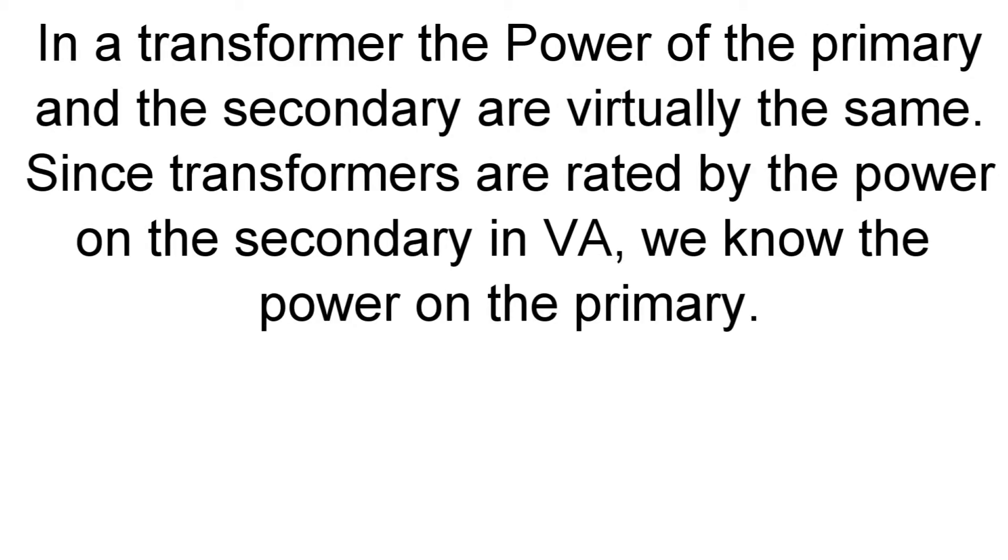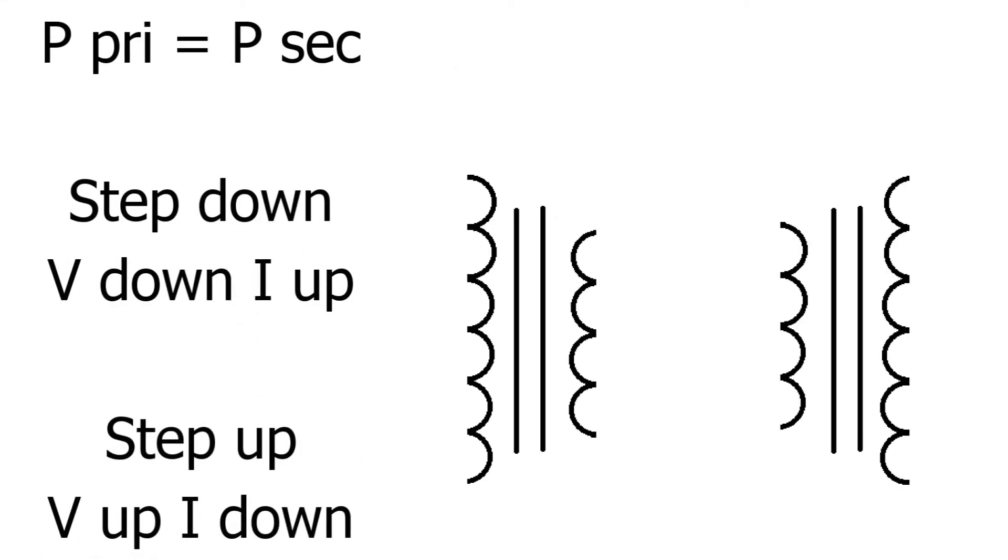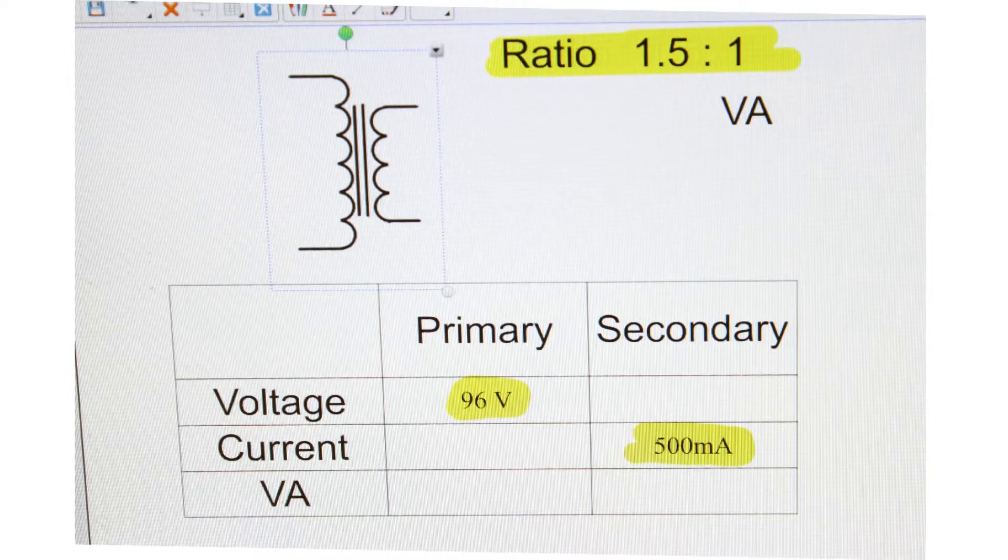In a transformer, the power of the primary and secondary are virtually the same. Since transformers are rated by the power on the secondary in volt amps, we also know the power on the primary. Primary and secondary power are equal. On a step down transformer, the voltage goes down and the current goes up. In a step up transformer, voltage goes up and current goes down.